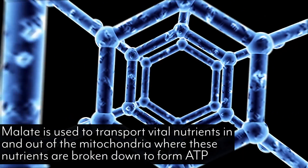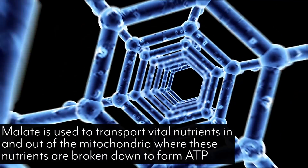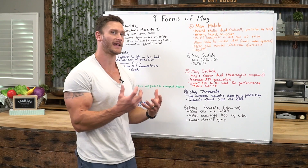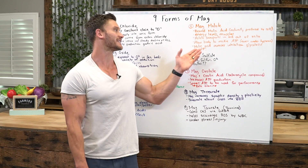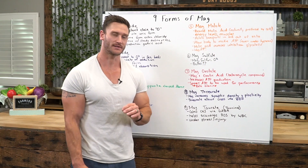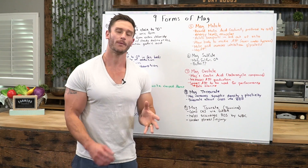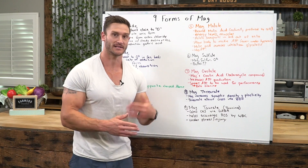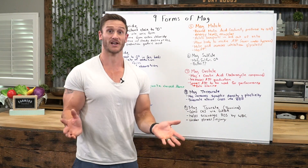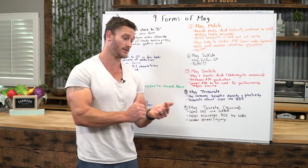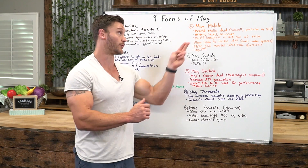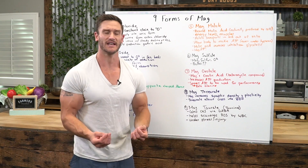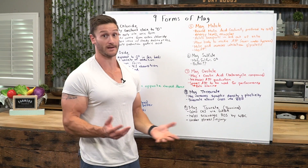ATP requires magnesium to actually create energy — it's called mag-ATP. Without magnesium being bound to ATP, the energy isn't actually even useful. The malic acid also reverses the inhibition of glycolysis. Basically this means that when our body is under stress, like when we're working out, it makes it so that the mitochondria can still produce energy even in a state of hypoxia with less oxygen. So if you're going up to altitude or have a hard workout, this is really good to take.